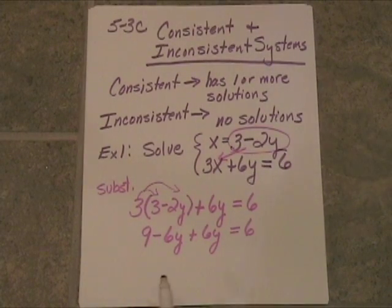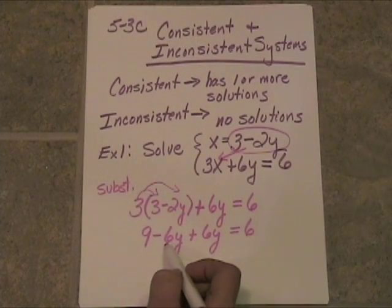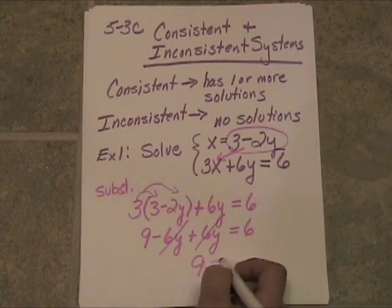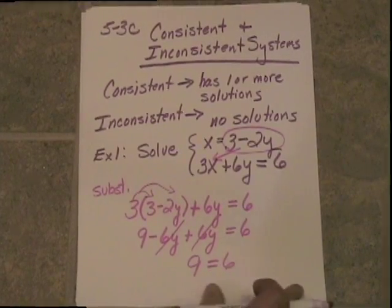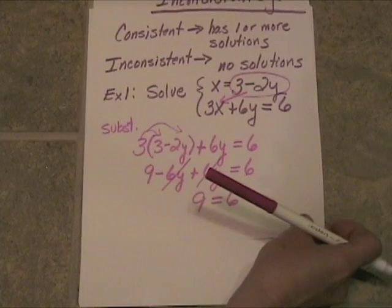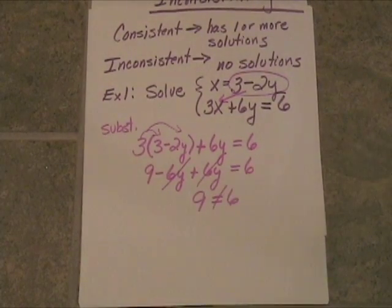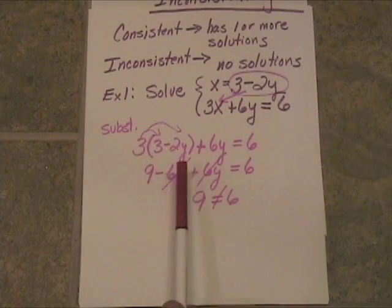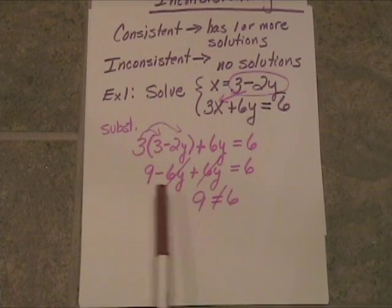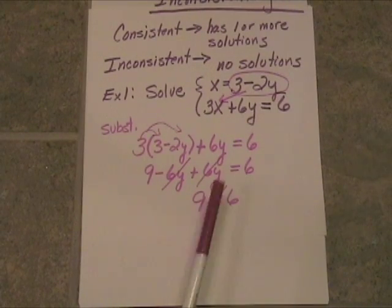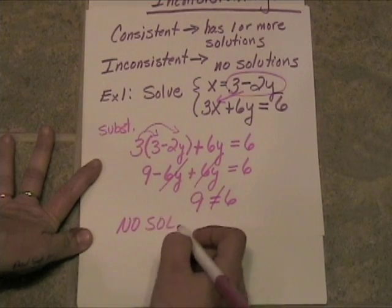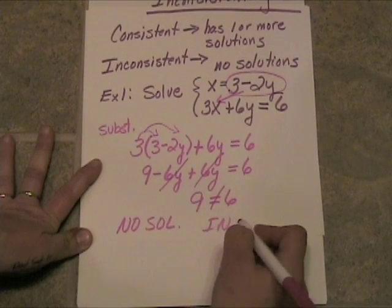Uh-oh, something's happened here. Negative six y, positive six y, those add to zero, and you're left with nine is equal to six. And that's just blatantly false. That's not true at all. So nine is not equal to six. So it turns out that we are looking at a system that can't be solved, because when we went ahead and tried to solve it algebraically, we came up with a false statement. All the variables dropped out, and we were left with a false statement. So there is no solution.